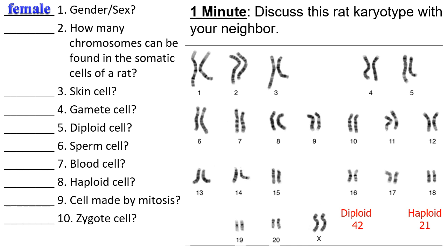Question two: how many chromosomes in somatic cells? Somatic cells are diploid — 42. Question three: how many in a skin cell? A skin cell is a somatic cell, so diploid — 42. Question four: how many in a gamete cell? Gametes are haploid — 21. Question five: the diploid number is 42. Question six: how many chromosomes in a sperm cell? A sperm cell is a haploid gamete — 21. Question seven: how many in a blood cell? Blood cells are somatic and diploid — 42. Question eight: haploid is 21. Question nine: how many chromosomes in a cell made by mitosis? Cells made by mitosis are diploid — 42. Question ten: how many chromosomes in a zygote? A sperm with 21 chromosomes combines with an egg with 21 chromosomes to make a zygote with 42 chromosomes.